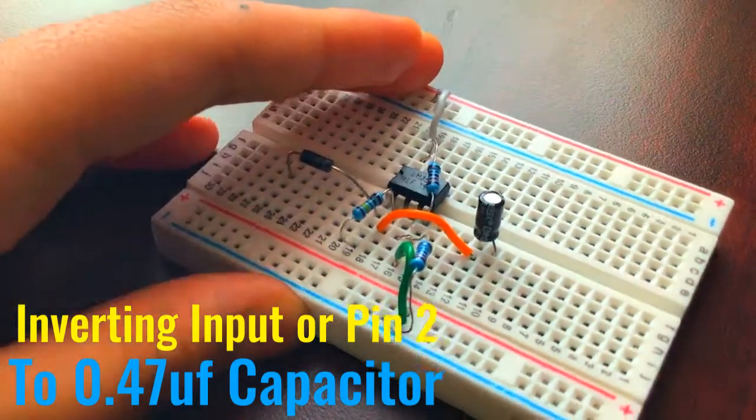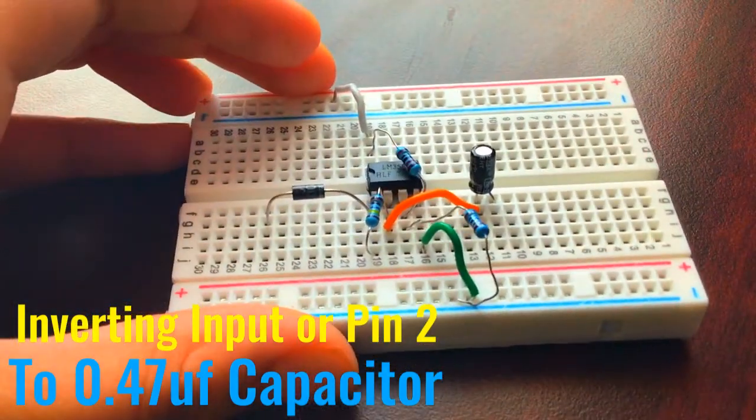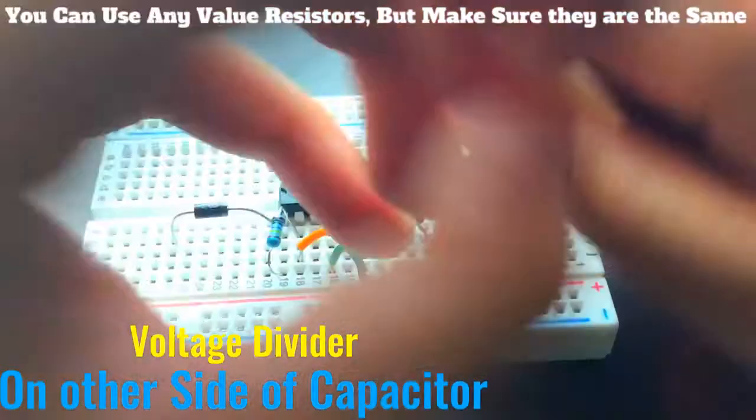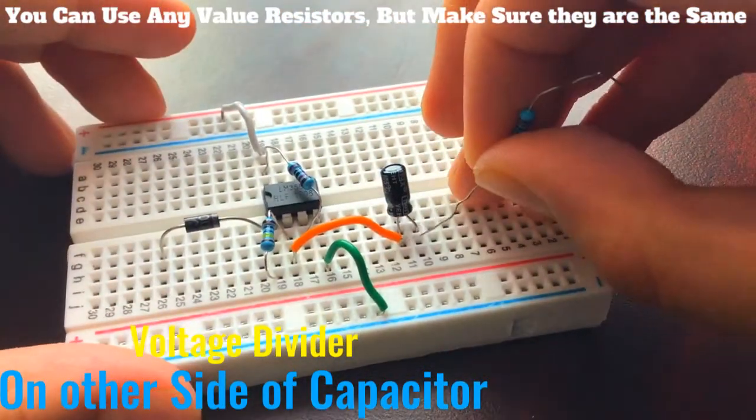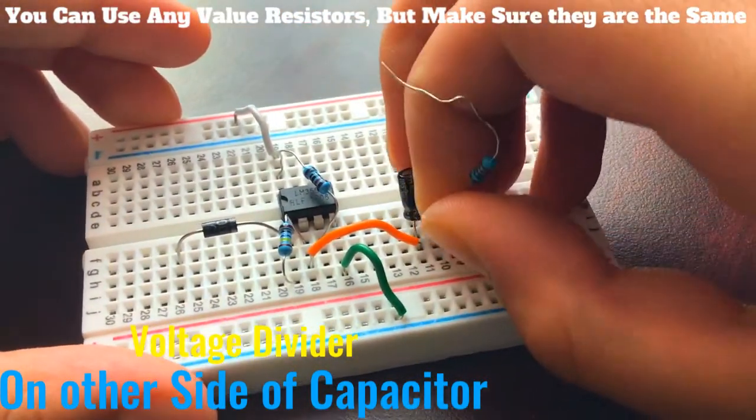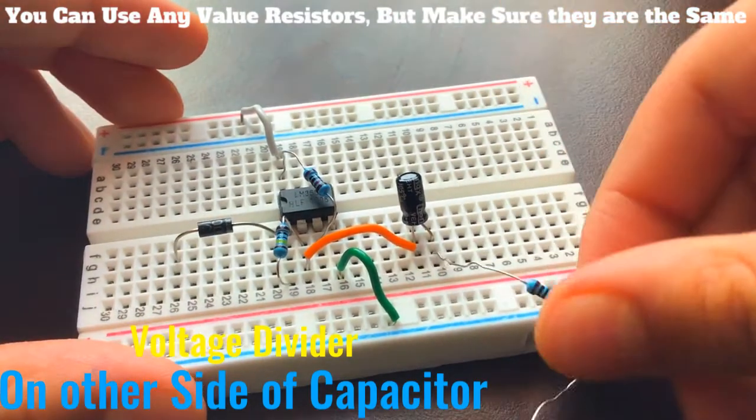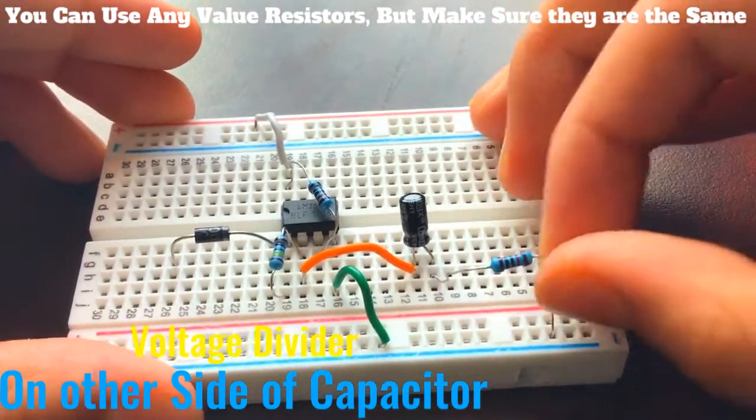Then we're going to form a voltage divider using 10k resistors again. We take the 10k resistor and place the other side of the capacitor, one to the negative and one to the positive, just like this.